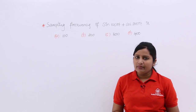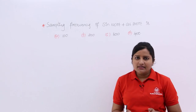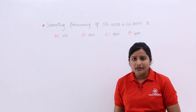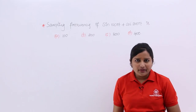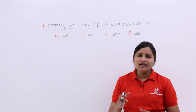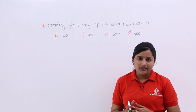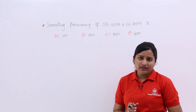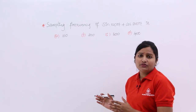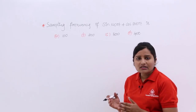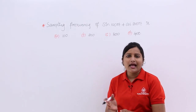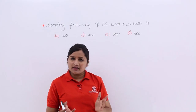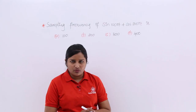If you consider a sampling frequency and by that sampling frequency you are going to sample your signal, then after the sampling process you need to reconstruct your signal perfectly. You need to consider your sampling frequency accordingly. How much frequency do you need to consider as sampling frequency to sample this signal and to reconstruct it back? This is the meaning of this question.